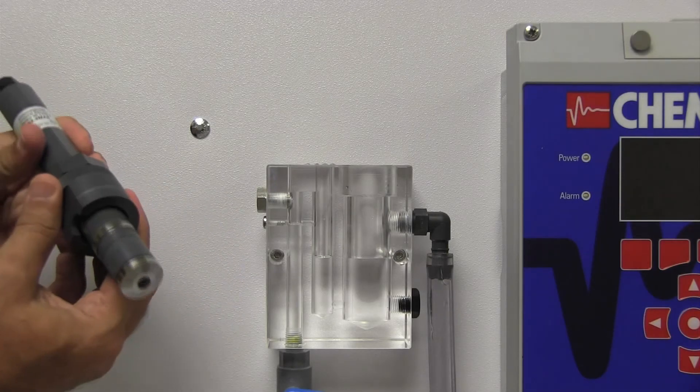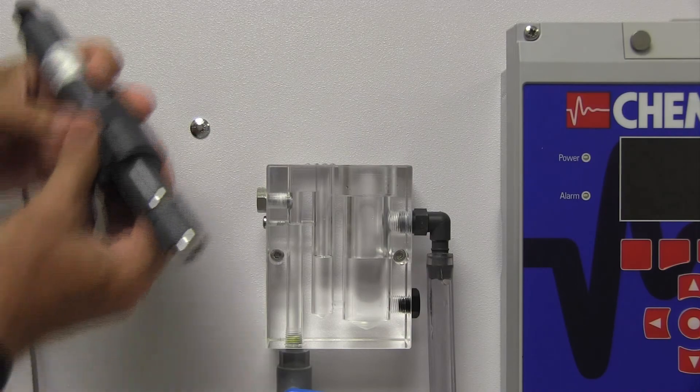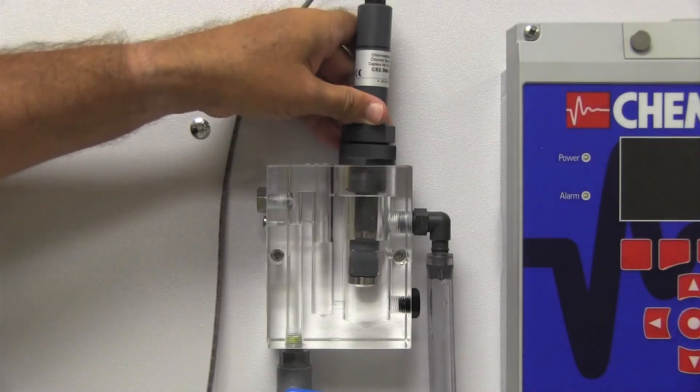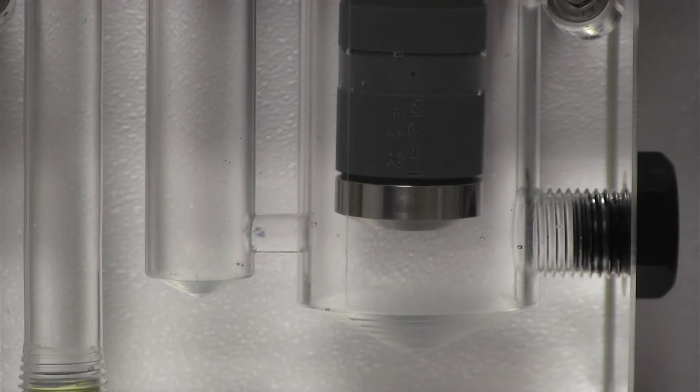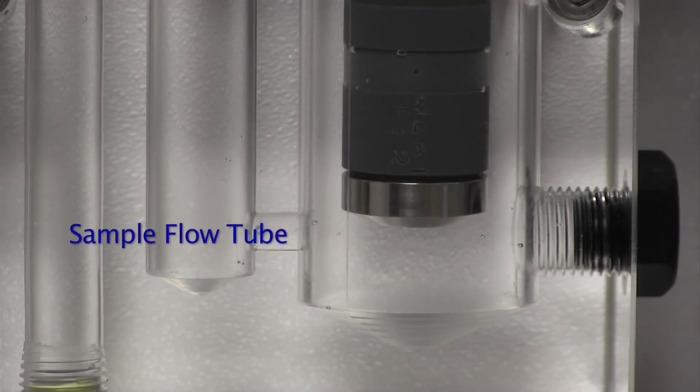When installing, slide the PVC fitting over the probe and then insert the probe into the flow cell. Adjust the PVC fitting so that the probe tip is positioned just above the horizontal sample flow tube near the bottom of the chamber.